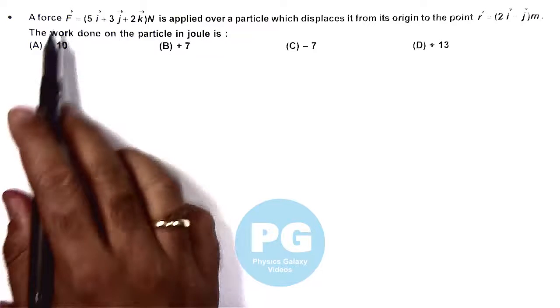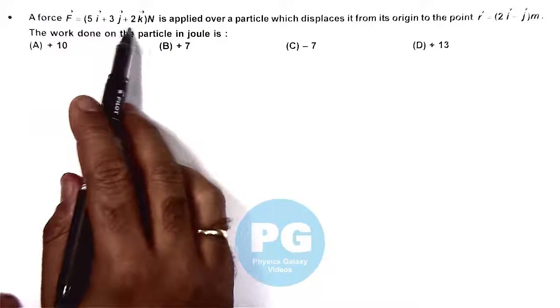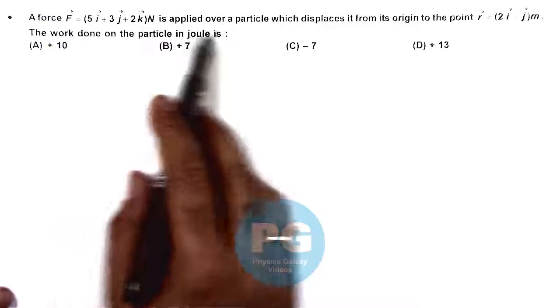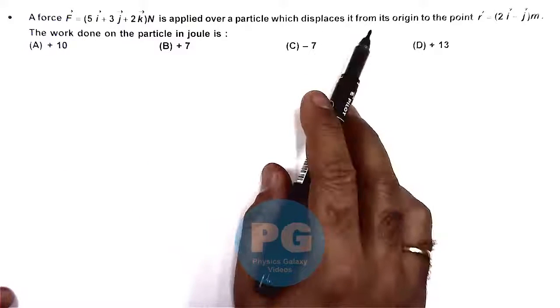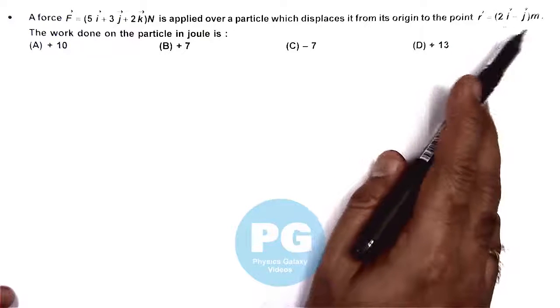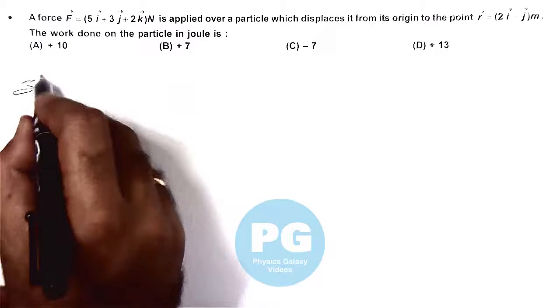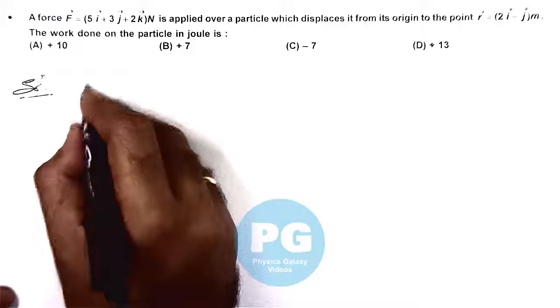In this question, a force of 5i + 3j + 2k Newtons is applied to a particle which displaces it from the origin to the point 2i - j meters. We are required to calculate the work done in Joules.